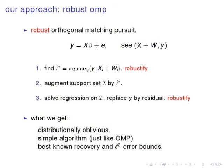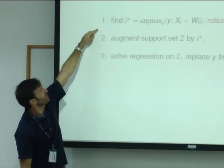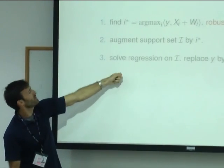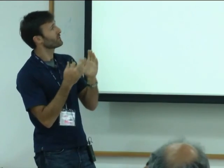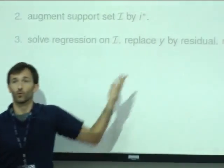So what we're going to do is we no longer get to see X, we get to see X plus W, and so we need to robustify this step. So we need to robustify the way that we find the next element of the support, and we need to robustify the way that we solve the regression. And this is actually a general template for this entire talk. So this is also what we do when we have adversarially corrupted columns, I'm sorry, adversarially corrupted elements of X and Y. But of course what we mean by robustify will have to be different.